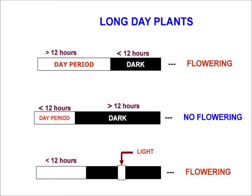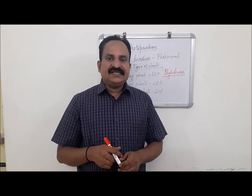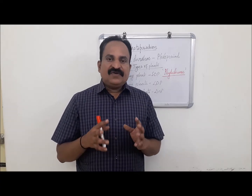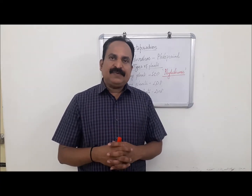Wheat, radish, cabbage, sugar beet, and spinach are examples of long day plants. In long day plants, the light period is critical. A brief exposure of red light in the dark period, or the prolongation of the light period, stimulates flowering in long day plants.